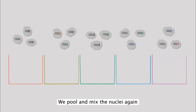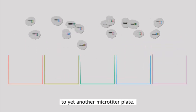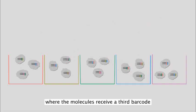We pool and mix the nuclei again and randomly distribute them to yet another microtiter plate, where the molecules receive a third barcode during PCR amplification.